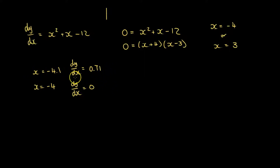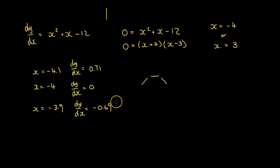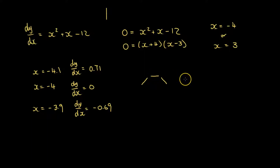So the gradient to the left of this point is a positive gradient. At the point minus 4 it's flat. What about to the right — so more positive than minus 4? Let's pick minus 3.9. Putting that into our gradient function gives us a gradient value of minus 0.69. So now this is a negative gradient, sloping downwards. We see that to the left of minus 4 the gradient's going up — it's positive — at minus 4 it's 0, and to the right it's going down — a negative gradient. So if our graph around minus 4 is shaped like this...